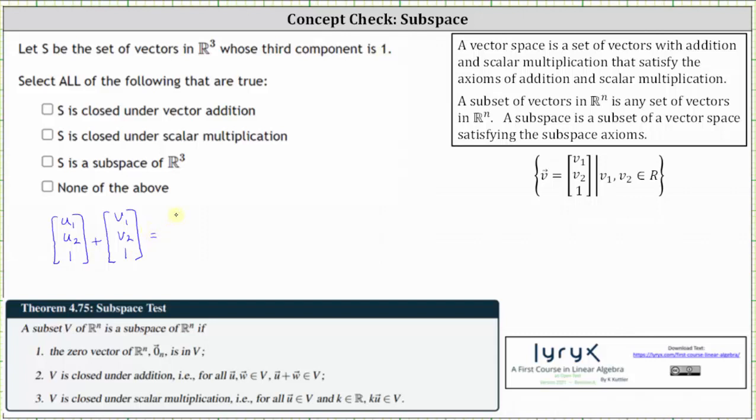Now we find the sum where the first component is U sub one plus V sub one, the second component is U sub two plus V sub two, and the third component is one plus one, which is two.